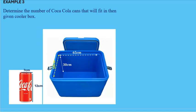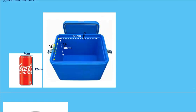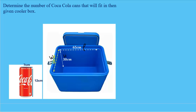In example three, we have a cooler box with inside dimensions: length 65 cm, width 50 cm, and height 30 cm. We also have a Coca-Cola can with a diameter of 7 cm. Looking at the bottom of the can, the length and width of a cylinder are both equal to the diameter. So both the length and width of the can equal 7 cm, and the height of the can is 12 cm.